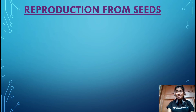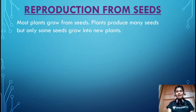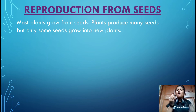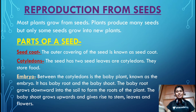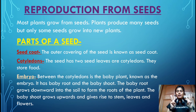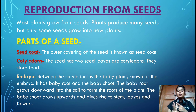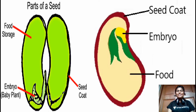Most plants grow from seeds, and plants produce many seeds, but only a few grow into a new plant. A seed has three main parts: first is the seed coat, second is the cotyledon, and third is the embryo.